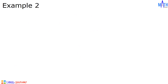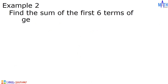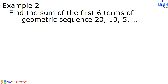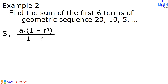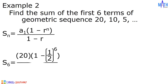Example number 2: let us find the sum of the first 6 terms of the geometric sequence 20, 10, 5, and so on. In this example, the first term is equal to 20, n is equal to 6, and if we divide any term by its preceding term, the common ratio is equal to 1 half. Let us substitute all the given values to the formula. S sub n becomes S sub 6 equals A sub 1, which is 20, times the quantity 1 minus r, which is 1 half, raised to n, which is 6, all over 1 minus 1 half.